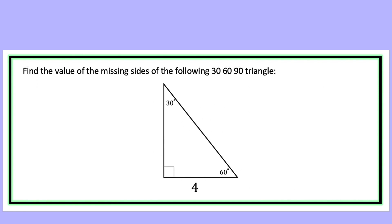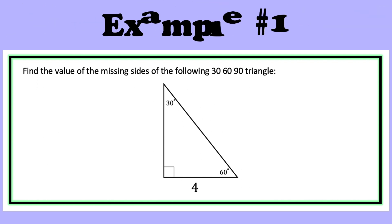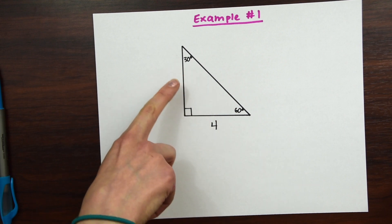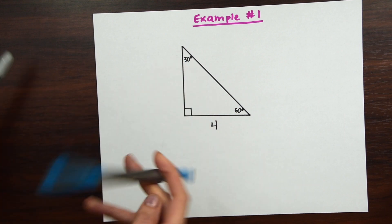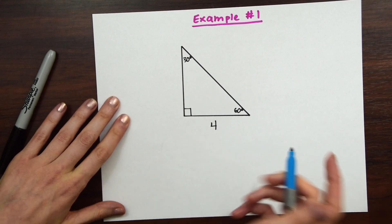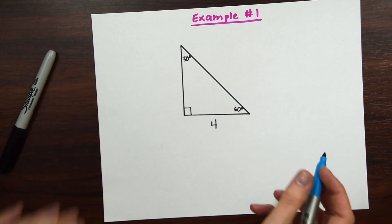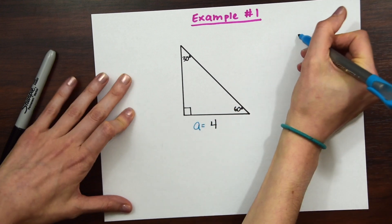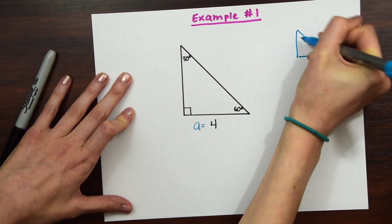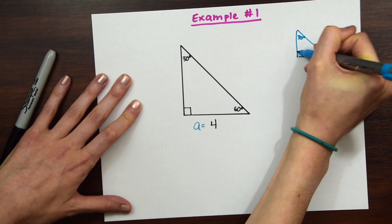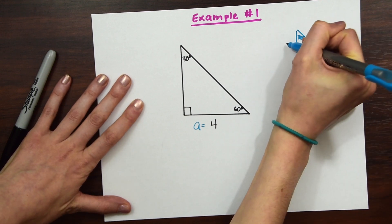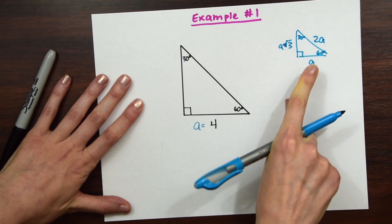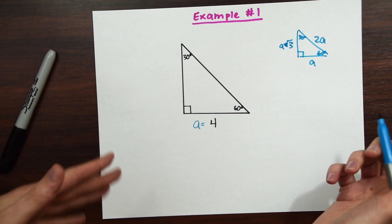Find the value of the missing sides of the following 30, 60, 90 triangle. So we're given this value of A right here, this value of the length across from 30 degrees, which is 4. So this is a really nice easy one because anything across 30 degrees is just equal to A. So if you remember, let's just write out the ratio on the side: 30 degrees, 60 degrees. So here we have A, this is A rad 3, and then this is 2A. So once we have A, we can answer any side really easily.